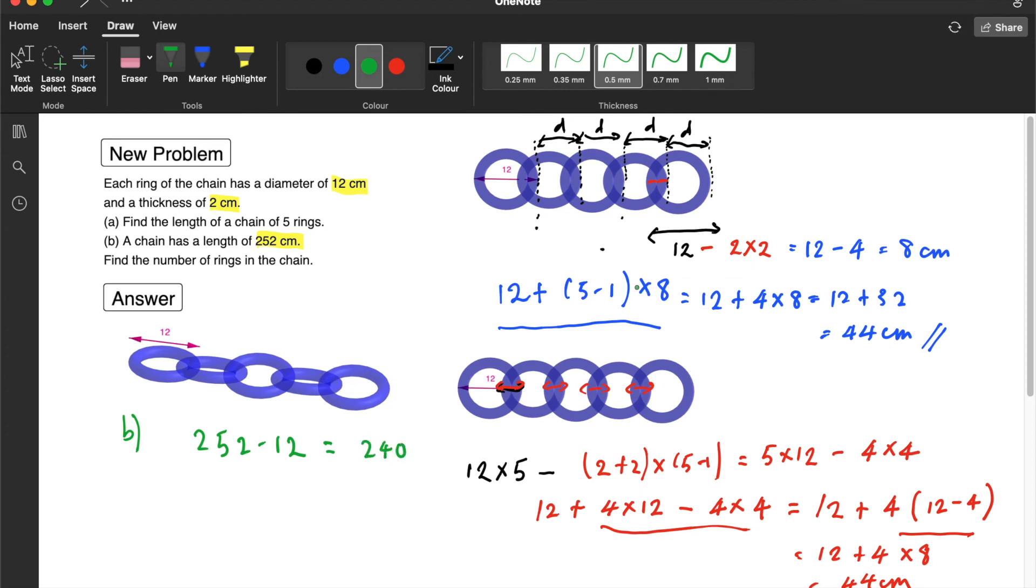Then, the next part is, instead of multiplying by 8, to get this 5 minus 1 or the number of rings less 1, we have to divide by 8. So, take 240 divide by 8. That will give us 30. But, you must remember that this 30 corresponding to this part is actually one less than the number of rings, because we minus off 12 here. So, the last step is actually to add that one back. One ring back. So, the final answer is 31.